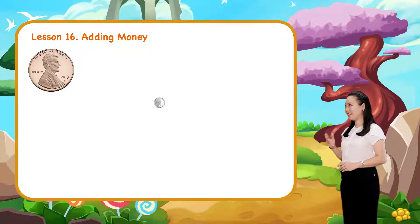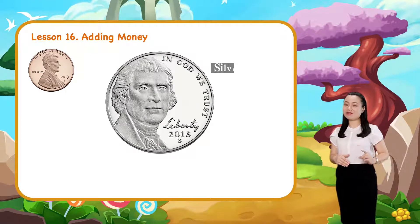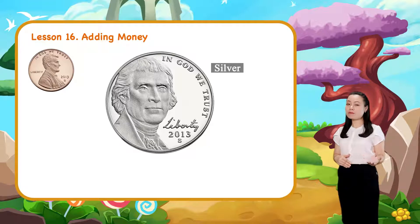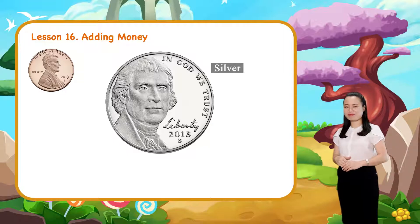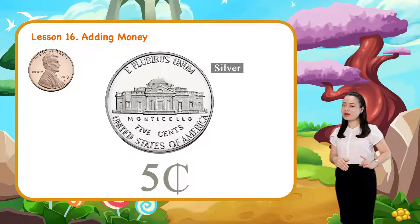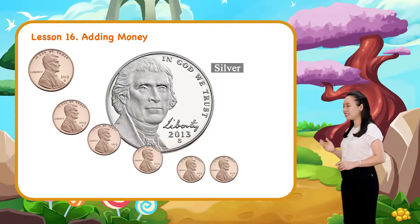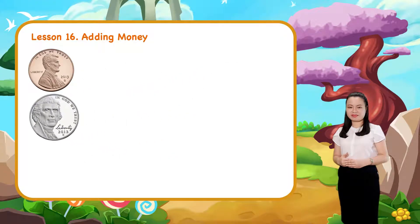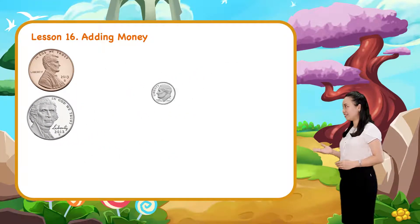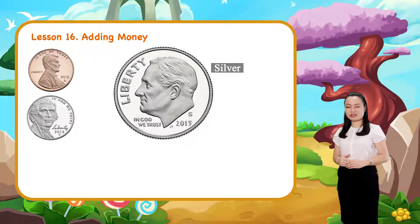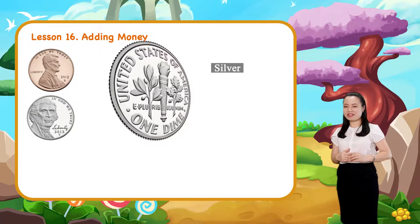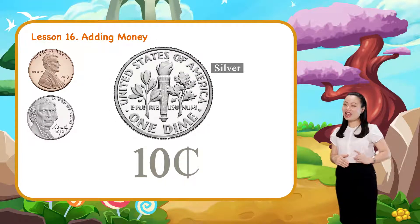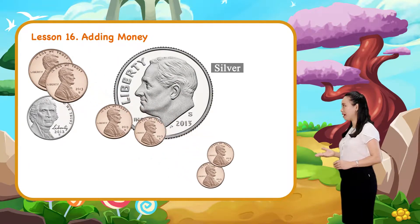This is the nickel. It's a silver colored coin that has President Thomas Jefferson on the front. It's worth five cents, which is the same as five pennies. This is the dime. It's a silver colored coin that has President Franklin D. Roosevelt on the front. It's worth ten cents, which is the same as ten pennies.